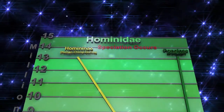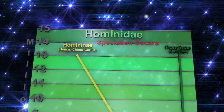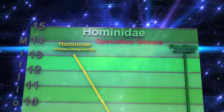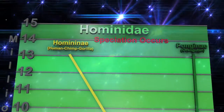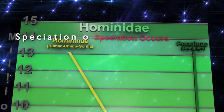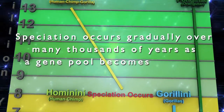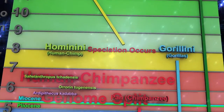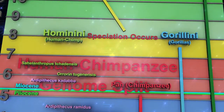Looking at a graphic overview covering the last 15 million years of our evolution, we know that around the 14 million year mark the human-chimpanzee-gorilla line and the orangutan line underwent speciation — a genetic split. Speciation occurs gradually over many thousands of years as the gene pool becomes divided. This division most likely arises out of geographic separation, though other factors may also play a role.